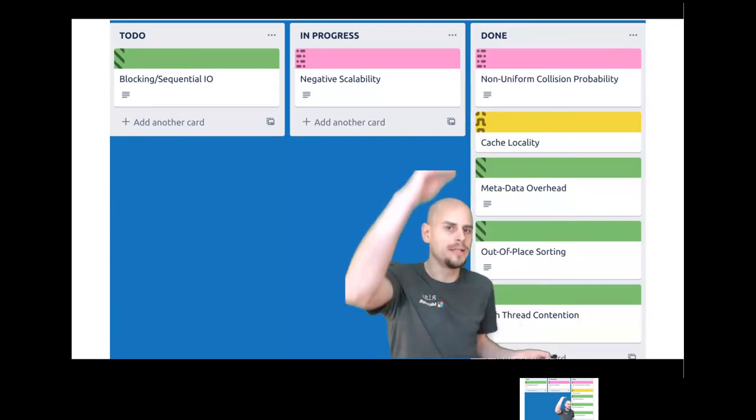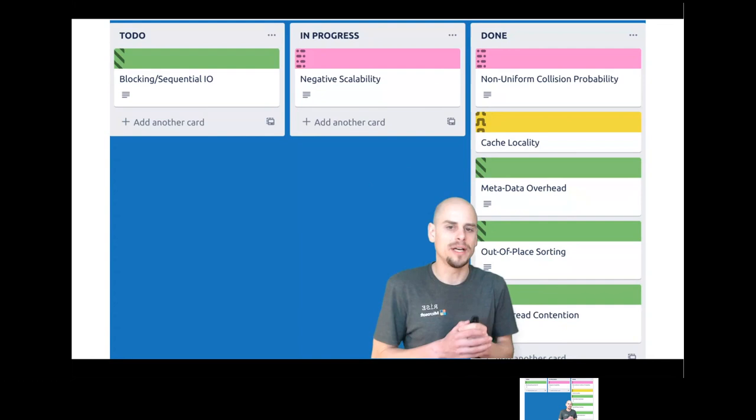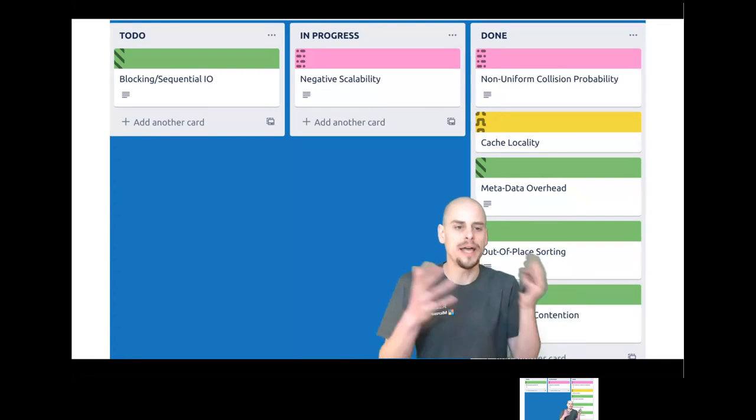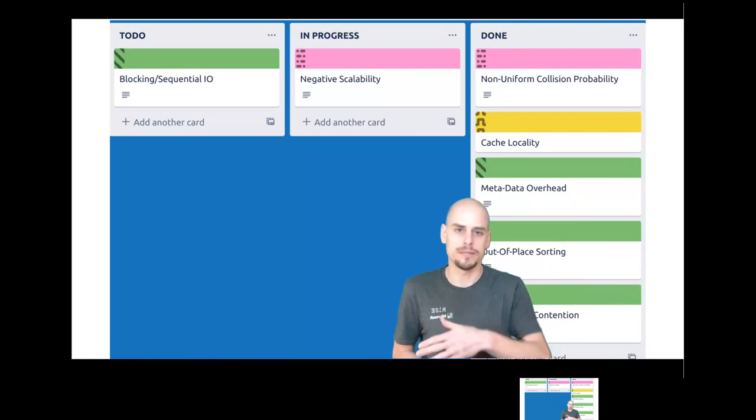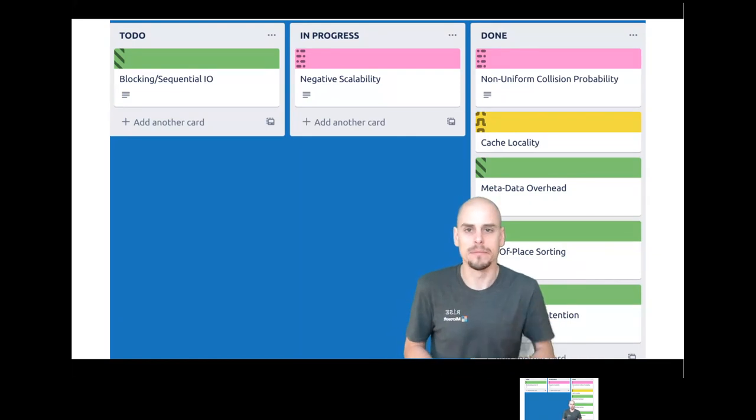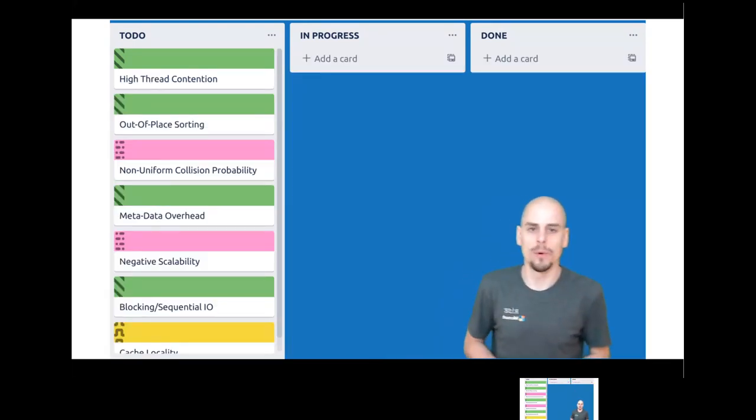But engineering is not necessarily about elegance. It's about getting things done. So I came up with this workaround that made the collision probability appear uniform from the outside, and that way improved the load factor, and it worked. Unfortunately, everything combined here, except for the code level optimizations, kind of led to negative scalability. So adding more resources to the system made the system slower. Bummer. Essentially, I was back at square one. The project had almost failed.